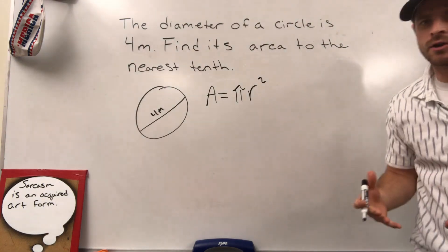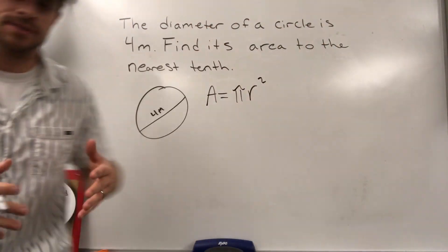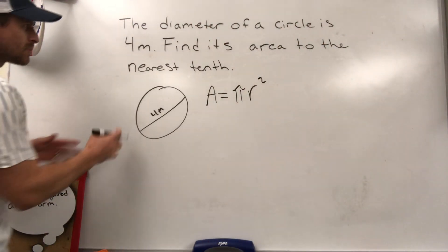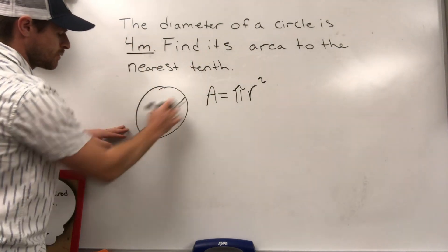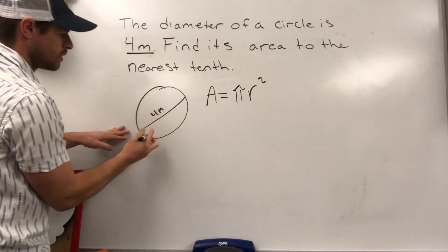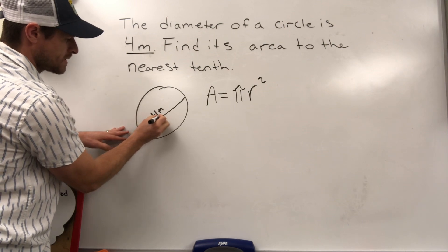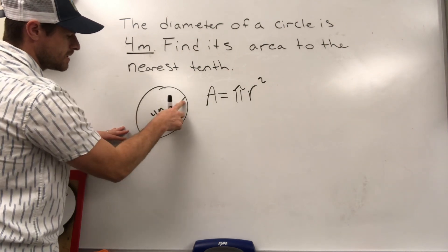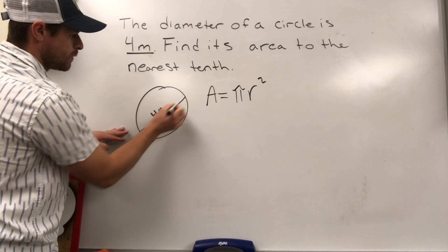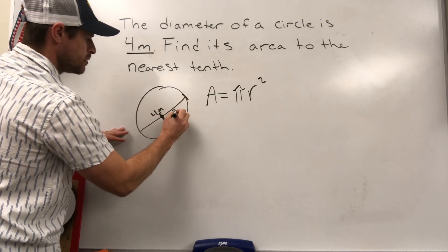Now, you have to understand what r is representing. R, in this case, is representing our radius. Our radius was not given. Instead, they gave us the diameter, which is all the way across the circle. But we want to cut that in half because the radius is from the center to the edge. So half of four would be two meters.